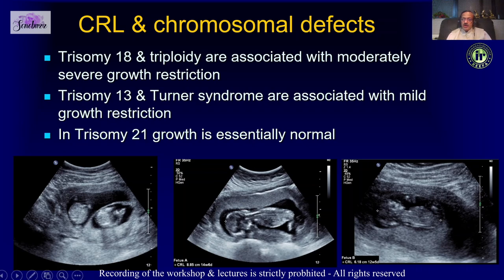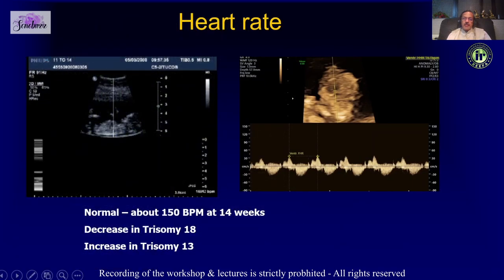Chromosomal abnormalities like triploidies or trisomy 18 can present as growth retardation, and when there is a twin difference in CRL it can mean a lot of complications, especially in monochorionic twins.